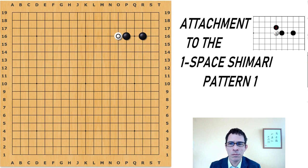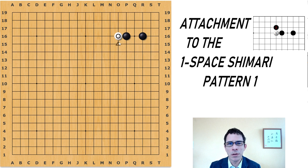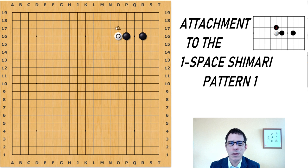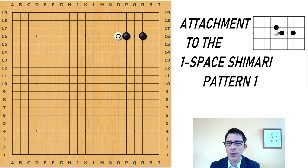Black has four choices against this move. In this video, most of the time I'm going to be talking about this hane underneath. Another very likely choice for black is to play a hane on top. In general, when your opponent has played an attachment against a position where you're fairly strong and the stones are touching, you have a choice of a move curling around it, or to extend from the attached stone — either this move or this move. Mainly I'll be talking about the hane underneath, but also I will mention these two extensions, which are relatively simple.